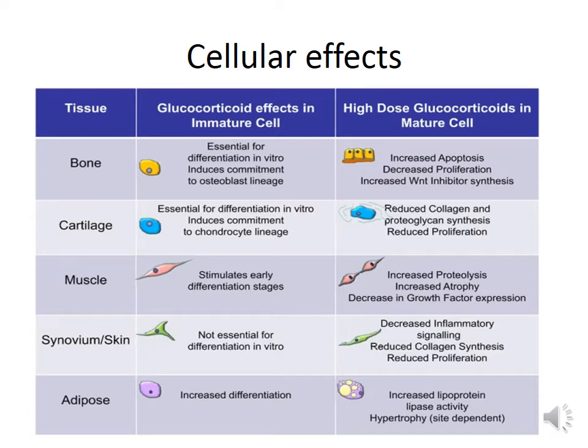On a cellular level, high-dose glucocorticoids have a drastic effect on cells constituting various tissues of the body. On osteoblasts, responsible for formation of bone, they increase apoptosis and decrease proliferation, leading to the well-known side effect of osteoporosis. They also affect chondrocytes, decreasing collagen secretion and proteoglycan synthesis, which makes cartilage more liable to rupture, and also decrease the proliferation of chondrocyte lineage.